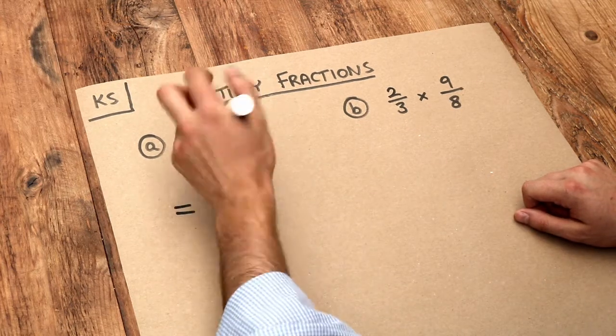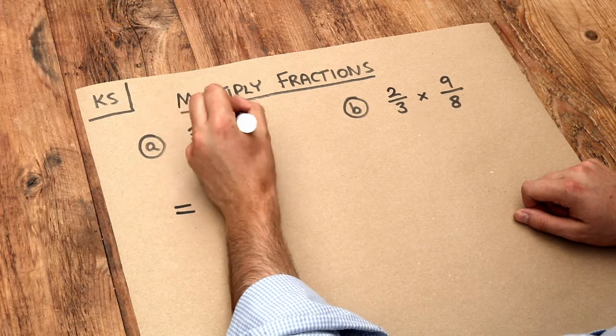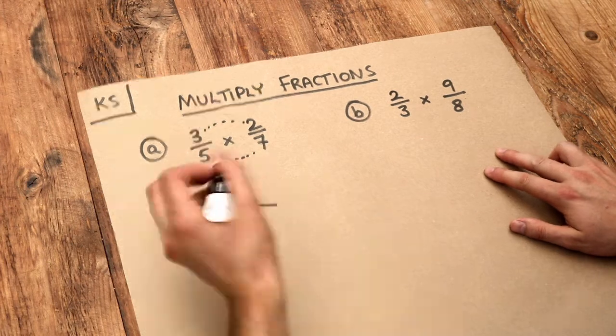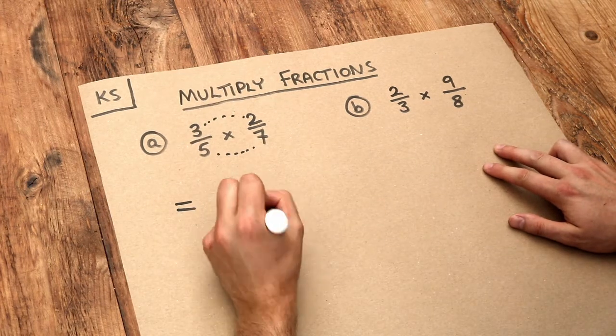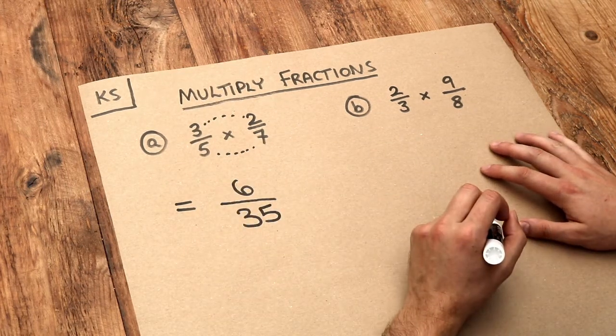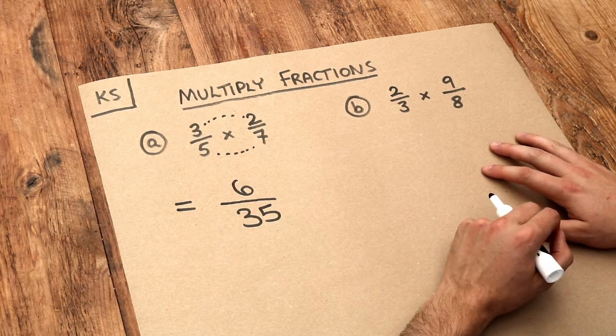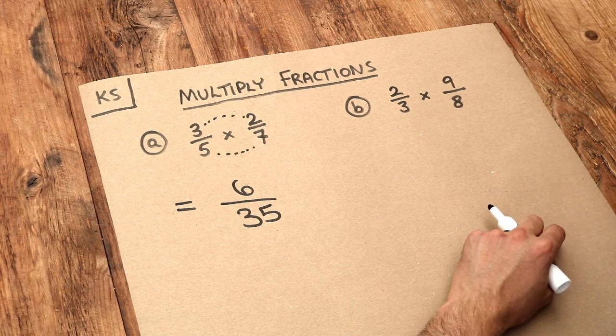So if we do the 3 times by the 2, we just get 6. And if we multiply the 5 by the 7, then we get 35. And then we might be able to simplify that fraction, but the thing is, 6 and 35 don't have any common factors, so we can't simplify that fraction further.